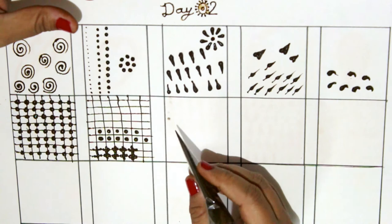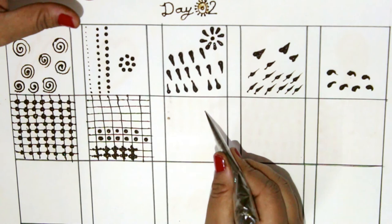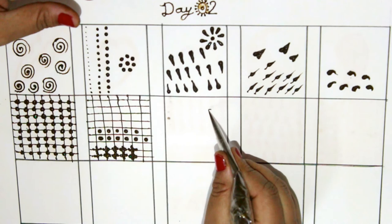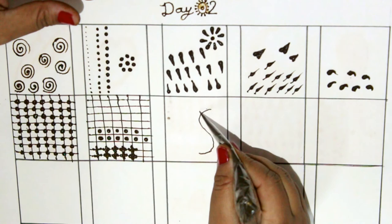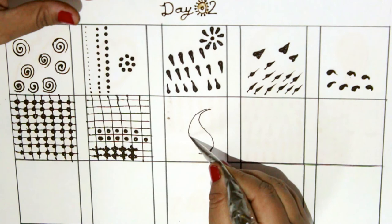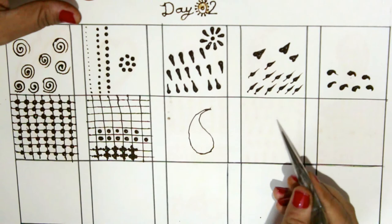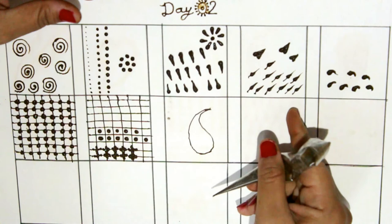Our eighth design will be of unripe mango design. We call it carry in Hindi. To make a carry, first make an S and then connect it with a C or a curvy line. If you find it difficult to make this design, make it using a pencil first and then practice it.